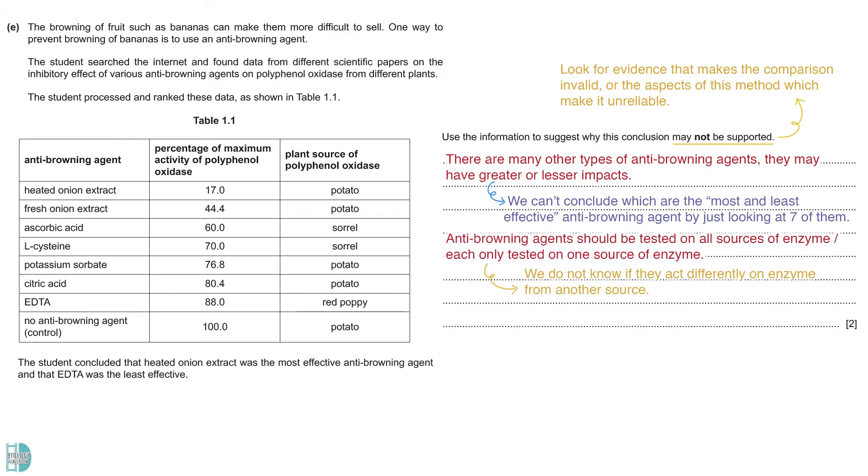To have a more valid comparison, all of the anti-browning agents should be tested on all sources of the enzymes. If each is only tested on one source of enzyme, we do not know if they act differently on other sources of enzymes. Lastly, the comparison has low validity as there are two independent variables, the types of anti-browning agent and the source of the enzyme.